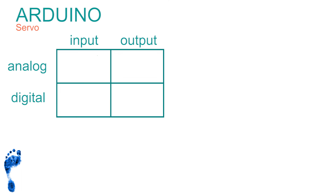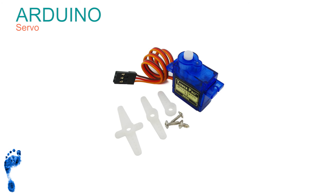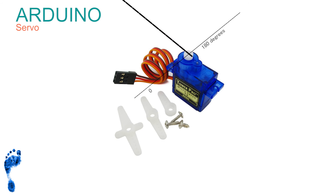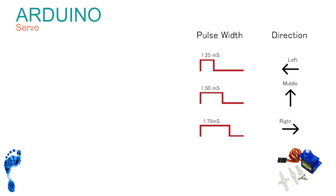We have completed all four combinations of input and output: digital in, digital out, analog in, and analog out. But there is one special output so useful it's included here — the servo. It's used for precise control: not a motor that turns continuously, but a geared motor that can turn and hold its position over half a turn — 180 degrees. The servo is driven to its position by sending it a precise timed set of digital pulses, a little like the analog write we used before.